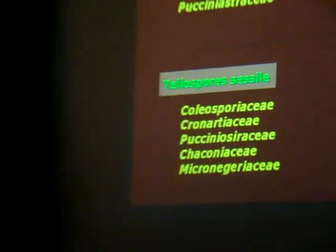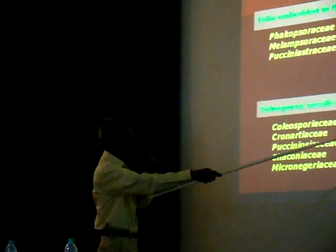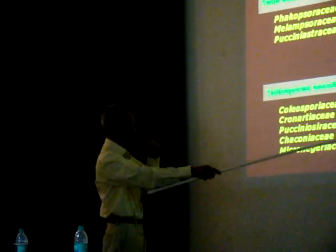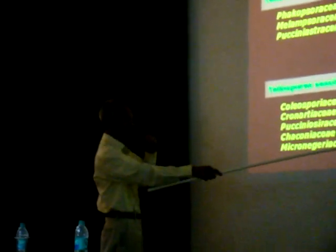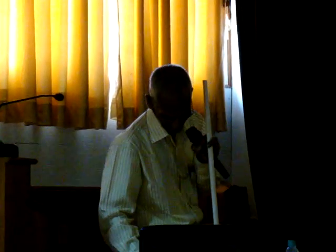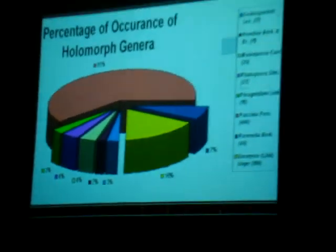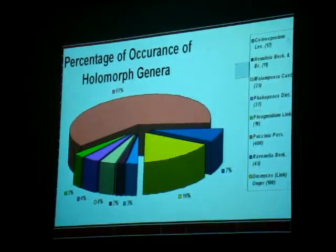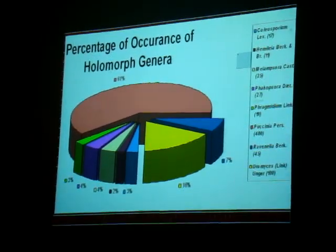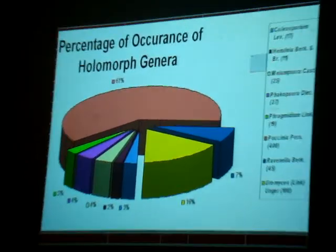The pedicillate teleospore families are Pucciniaceae, Phragmidiaceae, Polyloreaceae, Uropixiraceae, and Raveneliaceae. Now, this covers the percentage occurrence of holomorphic genera among these rust fungal families.